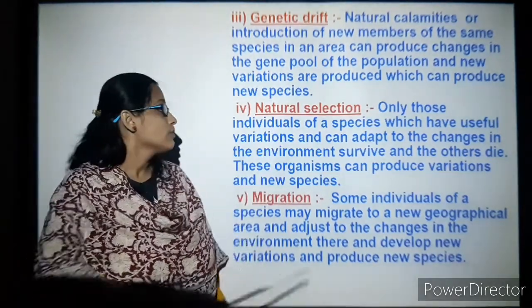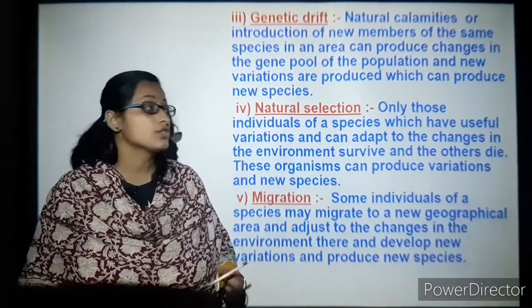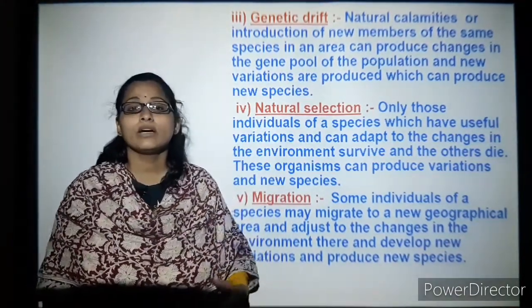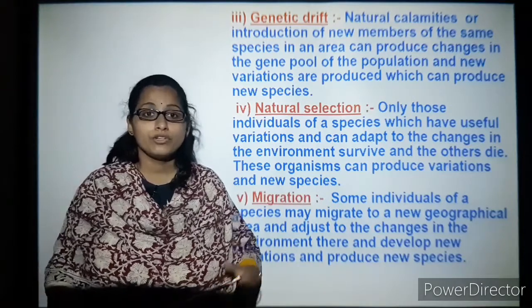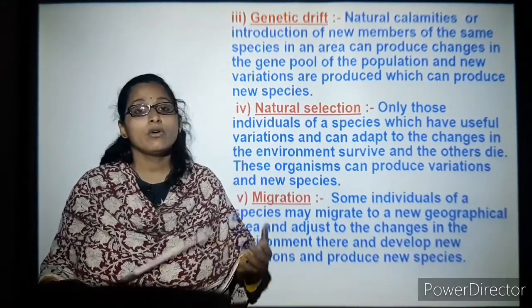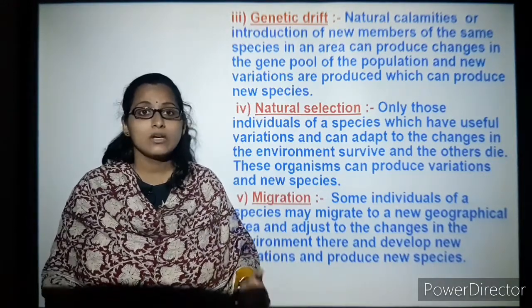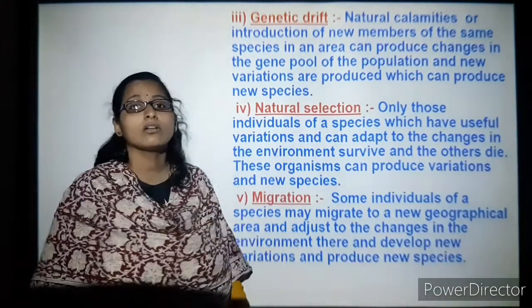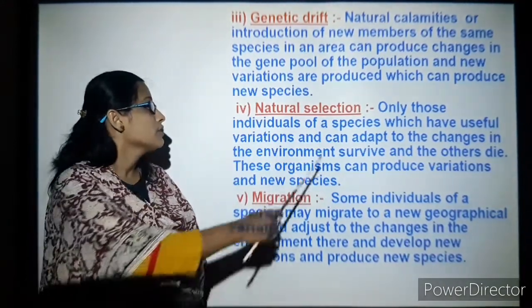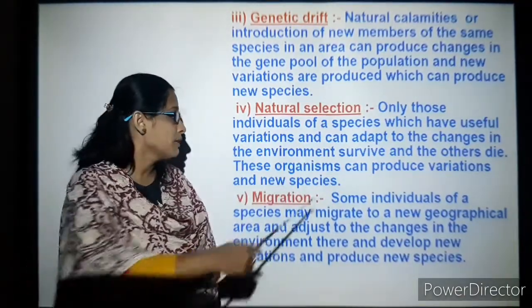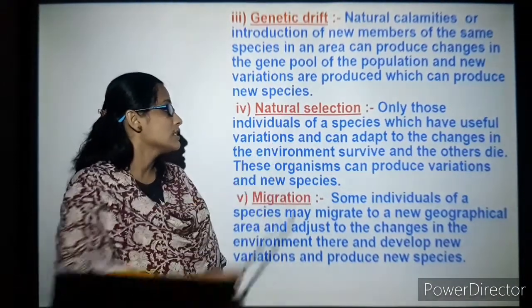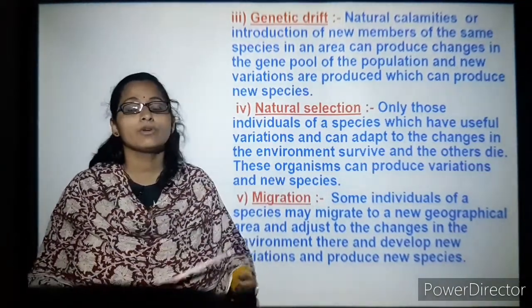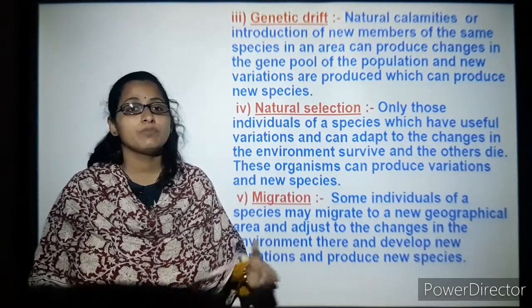Natural selection: individual species with useful variations adapt themselves to changes in the environment. When we move from one place to another, we get used to the new place. If we cannot adjust to the new living conditions, we either survive or we do not. Species that adjust to the environment will survive and others will die — this is natural selection. Surviving organisms produce variations and new species that can adapt to that particular environment.